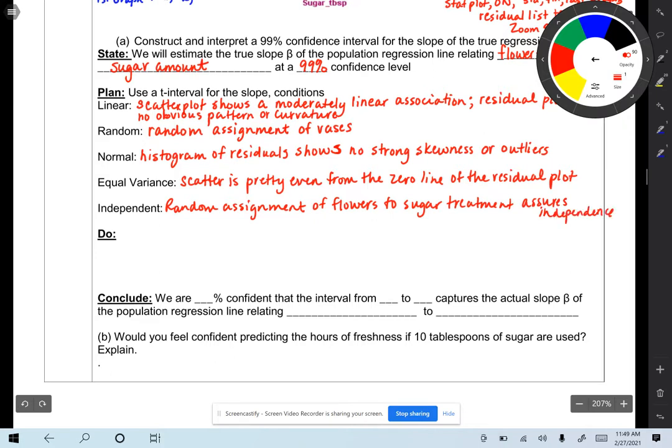All right, so seeing that all the conditions have been met, we can construct a t-interval for the slope. And so for our do portion, and again, this is in the video, but I will write down the steps here.